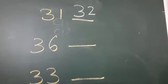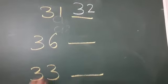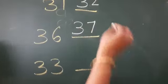3, 6, 36. Which number comes after 36? 3, 7, 37.